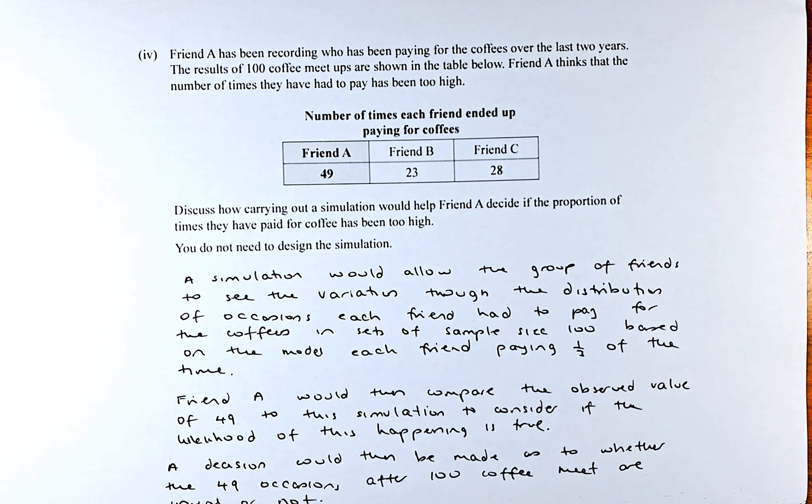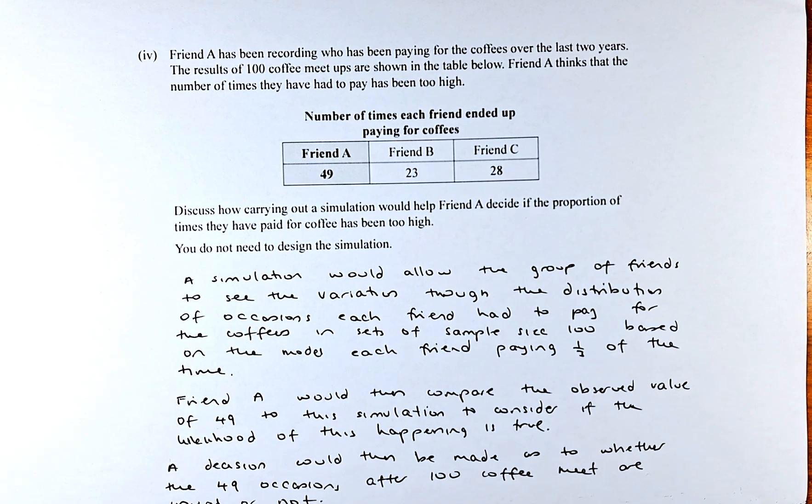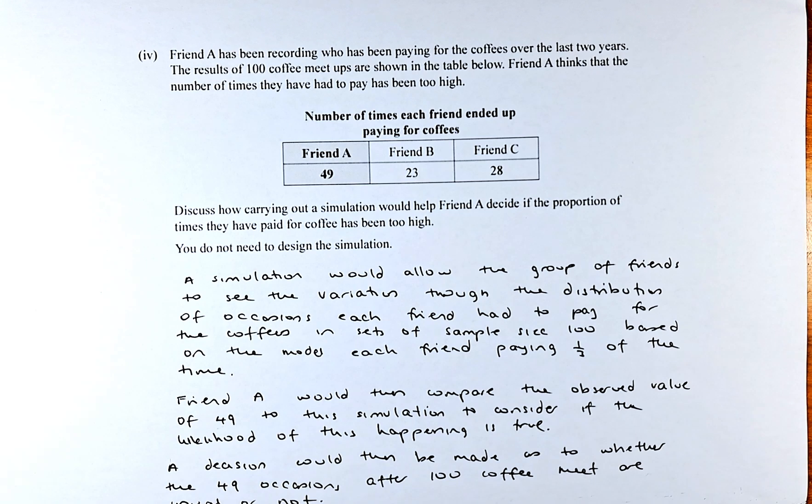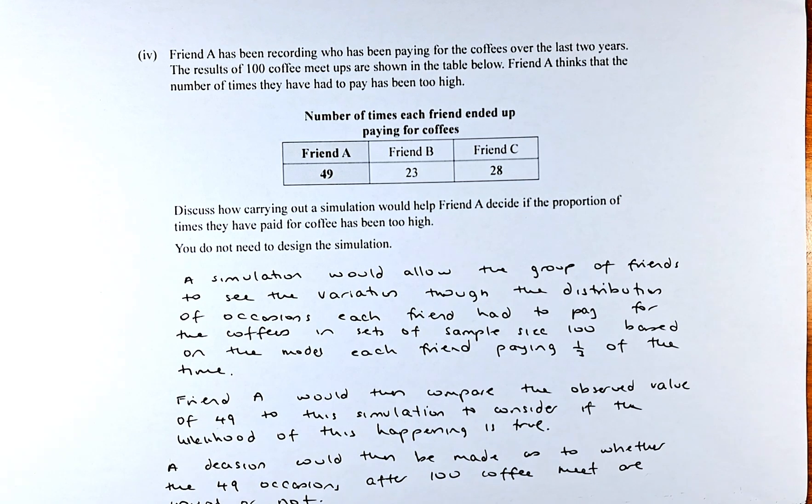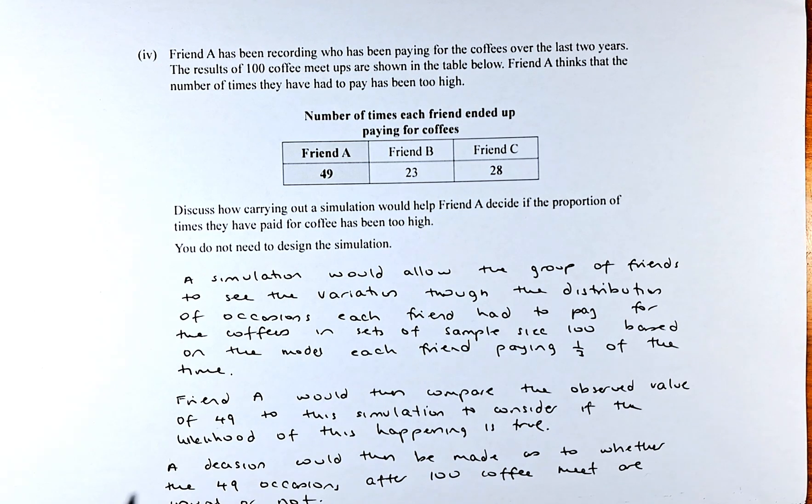A simulation would allow the group of friends to see the variation in the distribution of occasions each friend had to pay for the coffees. Based on a sample size of 100, with each friend having a probability of paying one third of the time, Friend A would then compare the observed value of 49 to the simulation to consider if the likelihood of that happening is true.